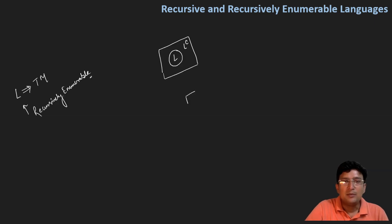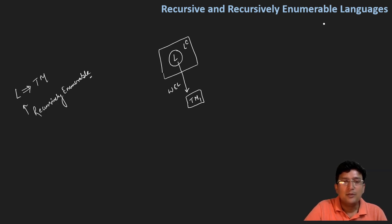मान लीजिए कि हमने एक Turing machine बनाई है, let's say Turing machine का नाम है TM1, और इस language में से हम एक string pick करते हैं, let's say there is a string named as w, which is the part of this language, that belongs to this language. So अगर हम इस w को TM1 को provide करते हैं, तो यह recognize कर लेगा इस w को और कहेगा कि yes।